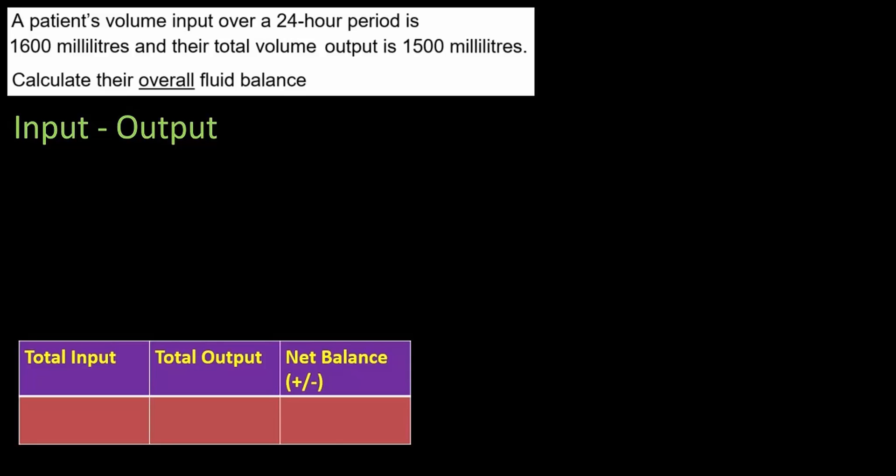1,600 millilitres take away 1,500 millilitres is 100 millilitres. So that will be our answer. But I just want to formalize it for us and make sure that my subtraction is in the right direction. So I like to fill out a little table. So here for our input I'm just going to write down 1,600 millilitres and my output is 1,500 millilitres.